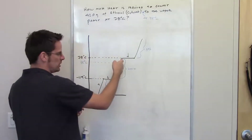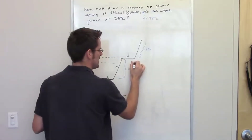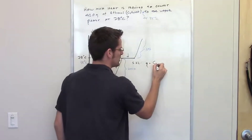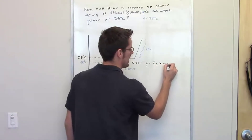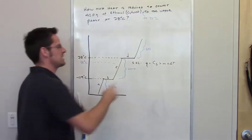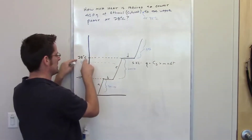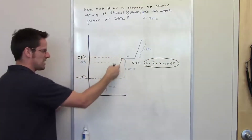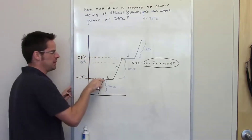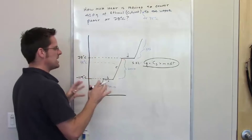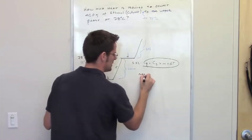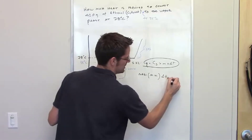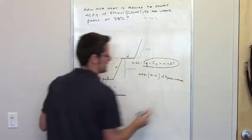Whenever you want to do a conversion up one of these slopes, the equation you're going to use is equation 5.22 from our text. That equation says the amount of heat Q required is equal to the specific heat of the substance multiplied by its mass multiplied by the total change in temperature — delta T. Any time you're going across a plateau, instead multiply the mass by the molecular weight and multiply that by the delta H of the phase change — vaporization or melting, whatever it happens to be.